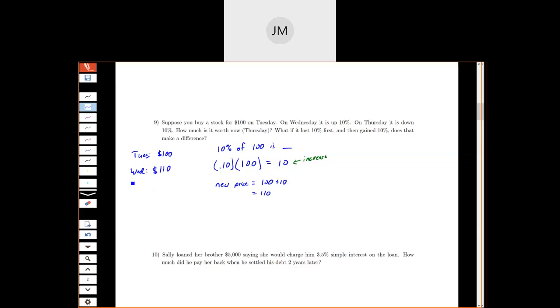On Thursday it's down 10%. So maybe we'll do Thursday in a different color. So I want to find 10% of its current price on Wednesday, right? So I want 10% of $110. So I get $11. So I want the price to go down by $11. So the new price is going to equal $110 minus $11, which is $99.